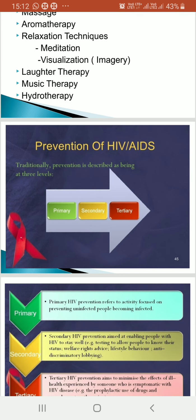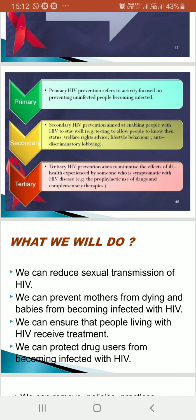Prevention of HIV AIDS occurs at three levels. At the primary level, we focus on activities to keep uninfected people from getting infected — through health education, imparting knowledge, advertisements. Secondary HIV prevention aims at enabling people with HIV to stay well — testing, lab investigations, welfare rights advice, counselling, and lifestyle modification.